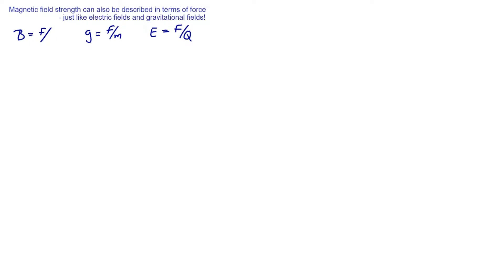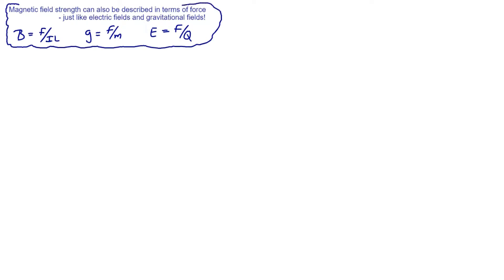Magnetic field strength is a bit weird. One way of expressing it is force per current length — in other words, the length of conductor L carrying a current I. There are a few more peculiarities about the magnetic field which we'll come back to. But it's good to see that there's that kind of analogy between the types of field.